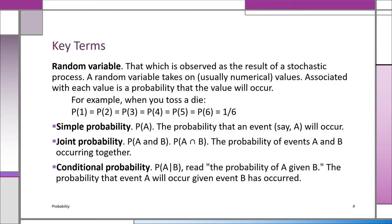Continuing with simple concepts — we'll see more when we work with problems. A simple probability is also called a marginal probability; it's just the probability of a single event, say P(A). A joint probability is the probability that two events will occur together, say P(A and B). A conditional probability is the probability of a particular event given that we know some other event has occurred — that vertical line means 'given.' So P(A|B) means: I know B has occurred; what's the probability of A?